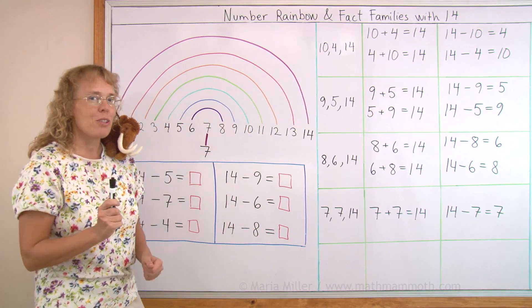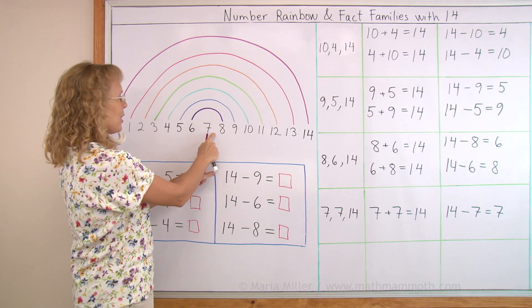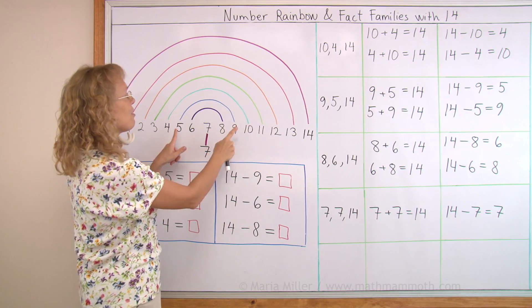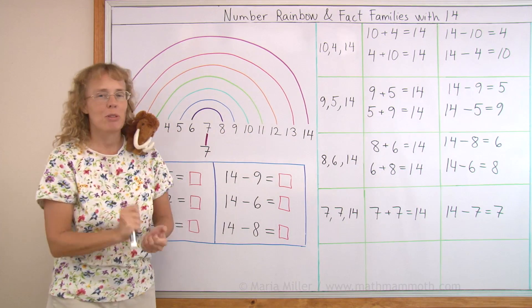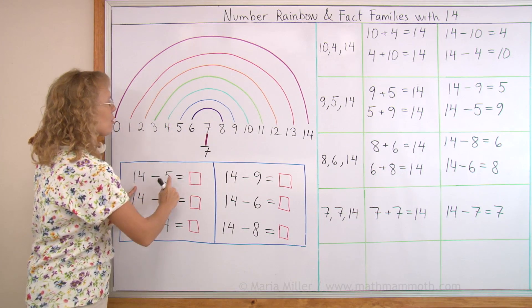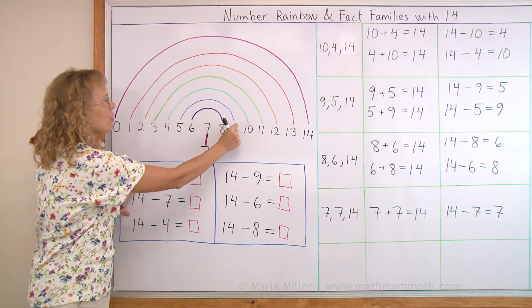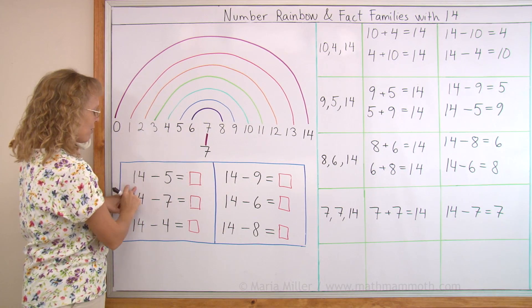Alright, let's review those number pairs that make 14. 7 and 7 makes 14, that's one of our doubles. And then 6 and 8 and 5 and 9, and then there's 4 and 10 too. And those are what we're going to practice here with some drill. Now remember, 14 minus 5, you can look at 5 and find 5's pair or partner by following the arc. 9. 9 goes here.